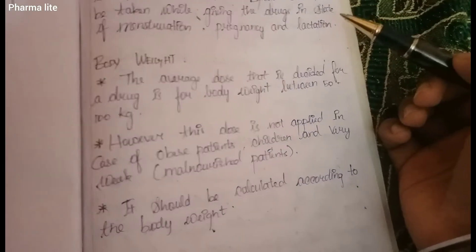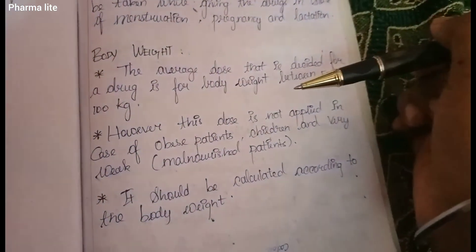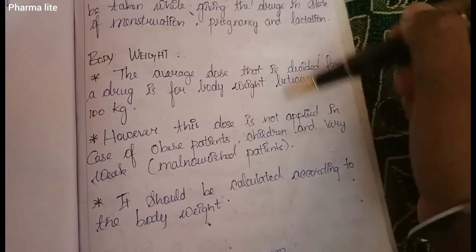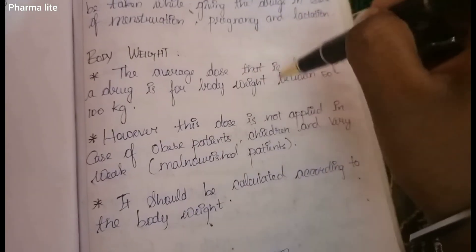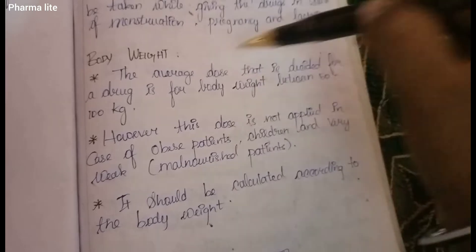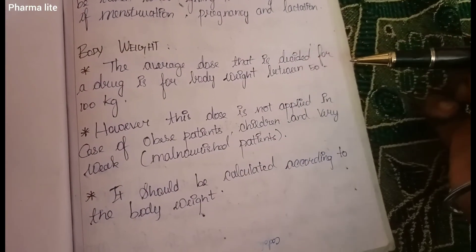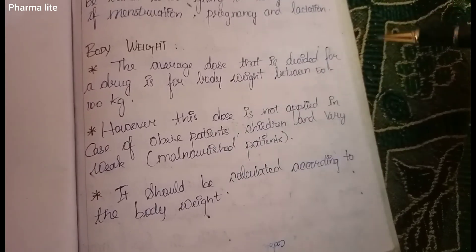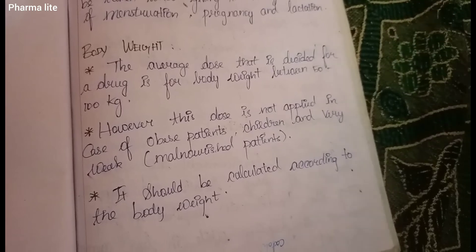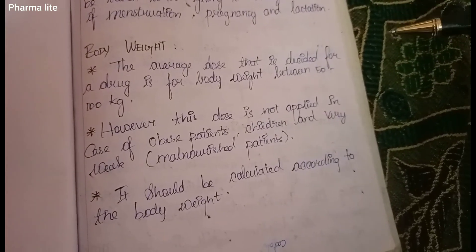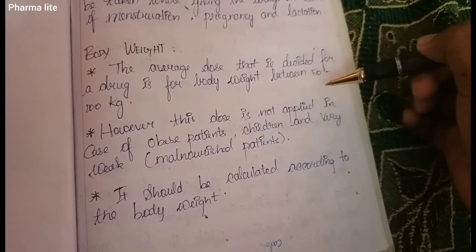Next is body weight. Body weight is a very important factor. The average dose of a drug is calculated for a body weight between 50 to 100 kg. For example, 70 kg is equal to 150 lbs. If a patient's weight differs, the dose must be calculated accordingly.